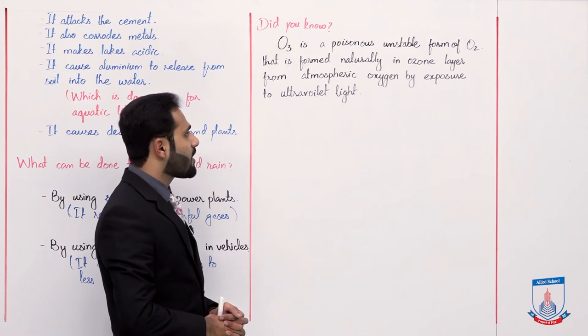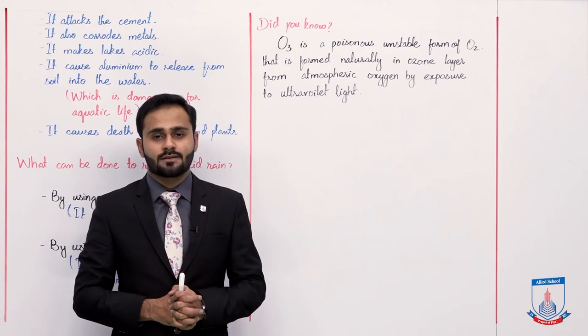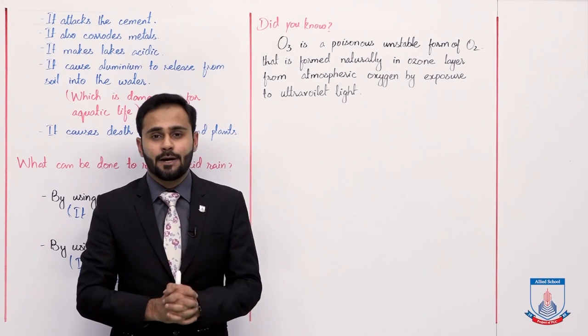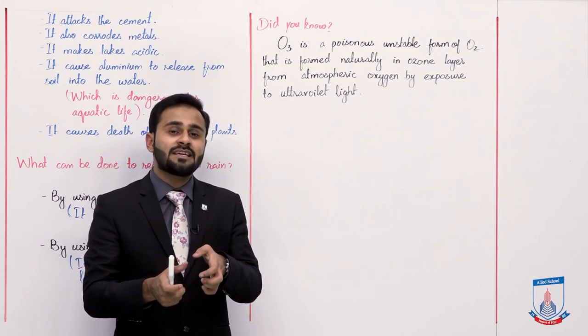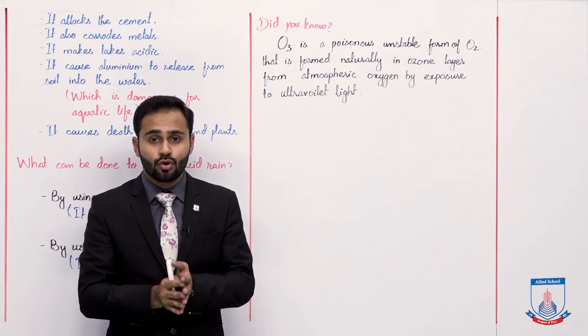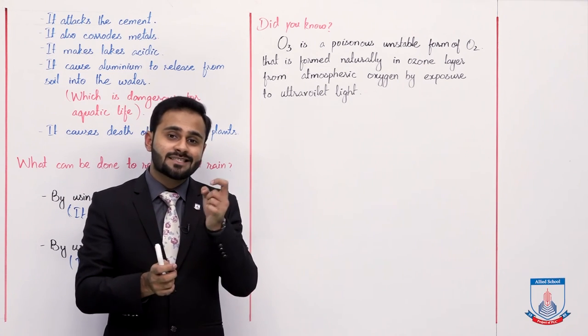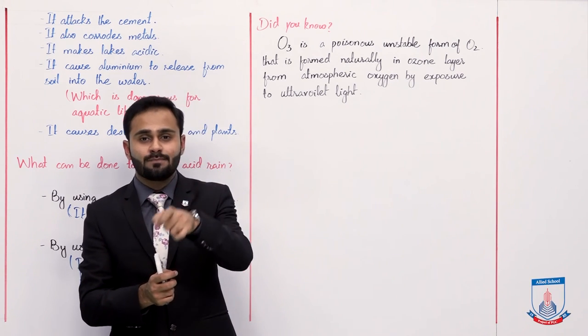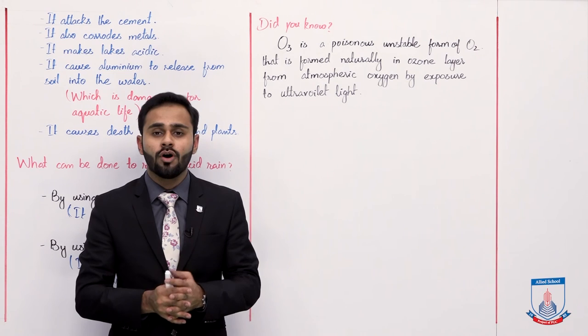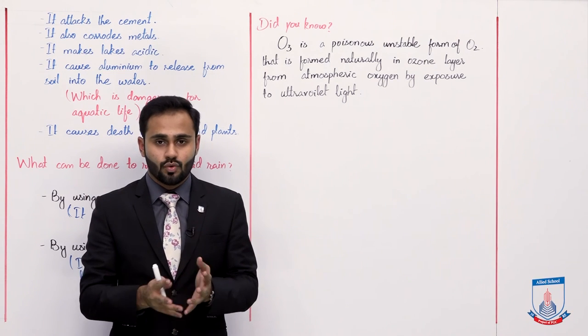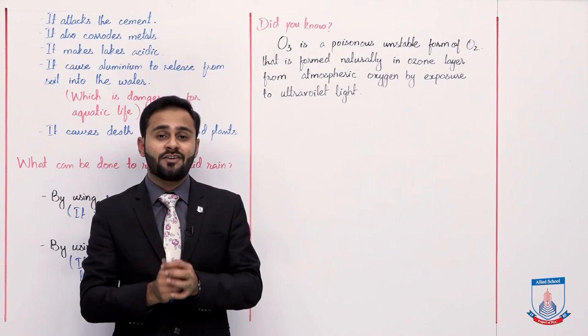Clear? So, oxygen by exposure to ultraviolet light. So ozone, that is poisonous unstable gas. Okay, that is O2. That is O2. So O3 is a poisonous gas and is also dangerous to our human life.